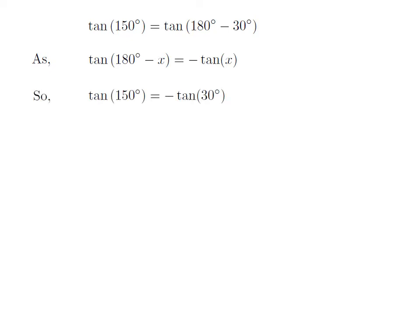Let us apply the above identity for tangent of 150 degree. Here, x is 30 degree, so tangent of 150 degree is equal to minus tangent of 30 degree.